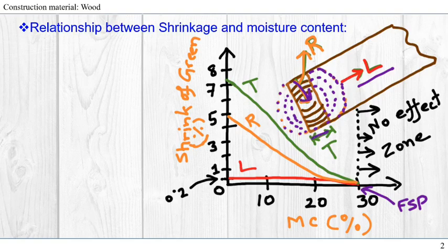In the graph, below FSP which is 30, the shrinkage in longitudinal direction is very small, 0.2% minimal. In the radial direction, the shrinkage from FSP to oven dry is 5%.